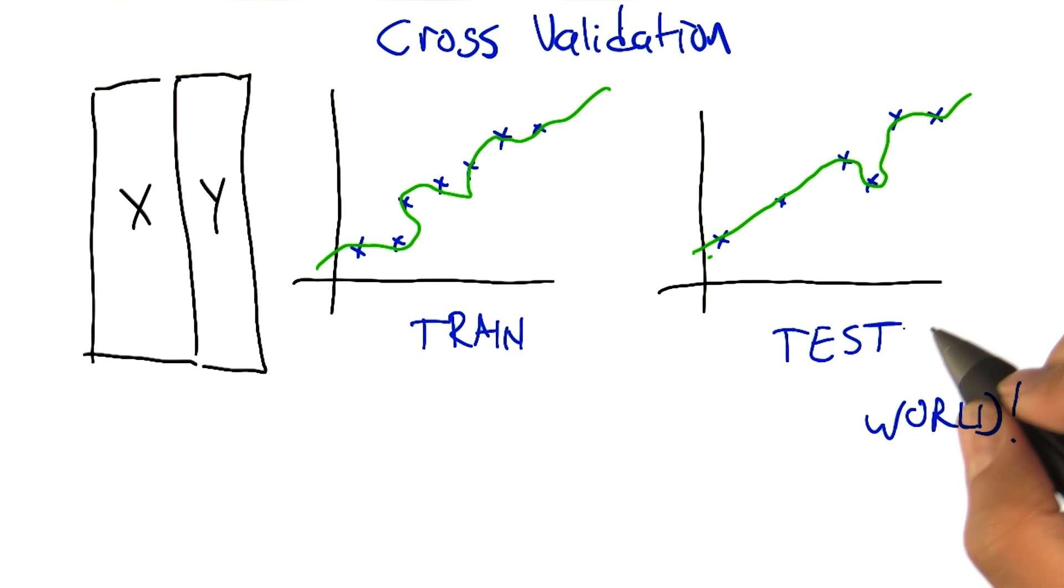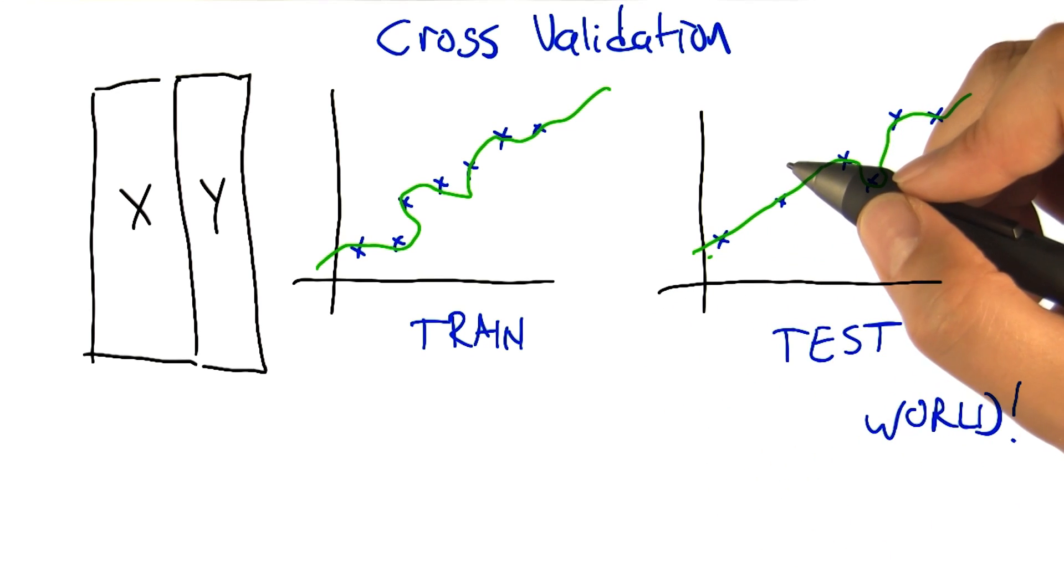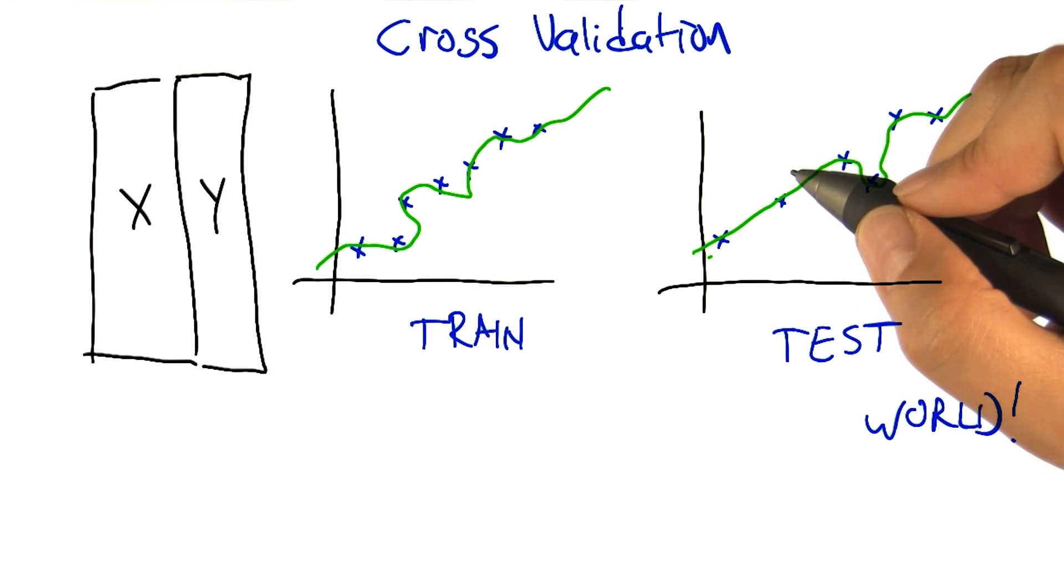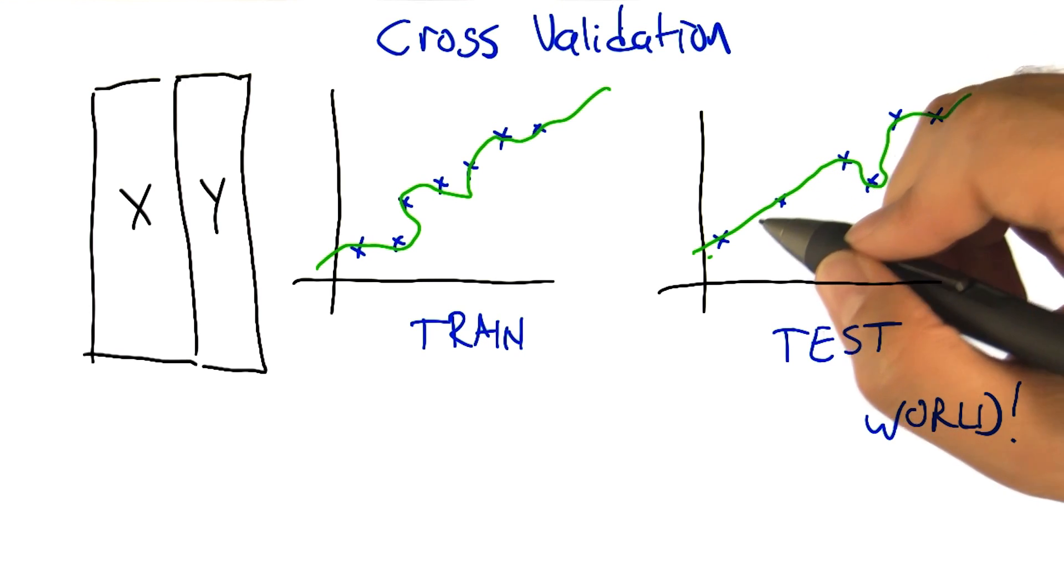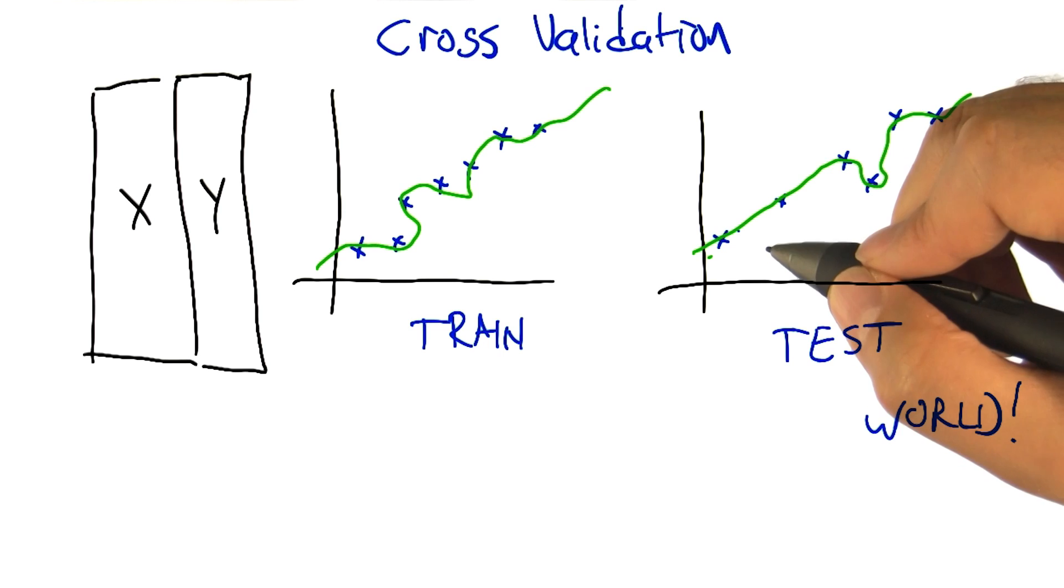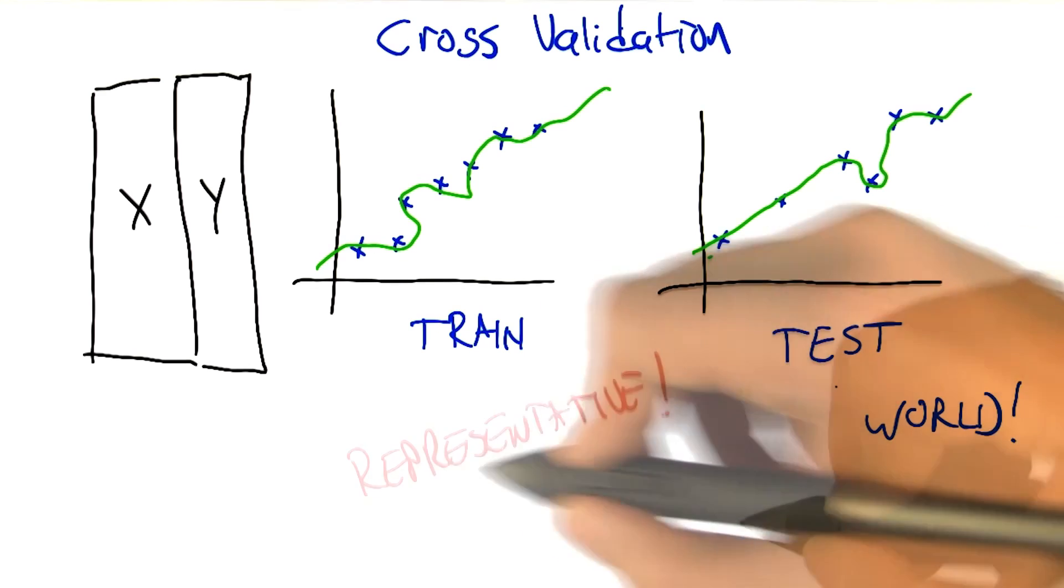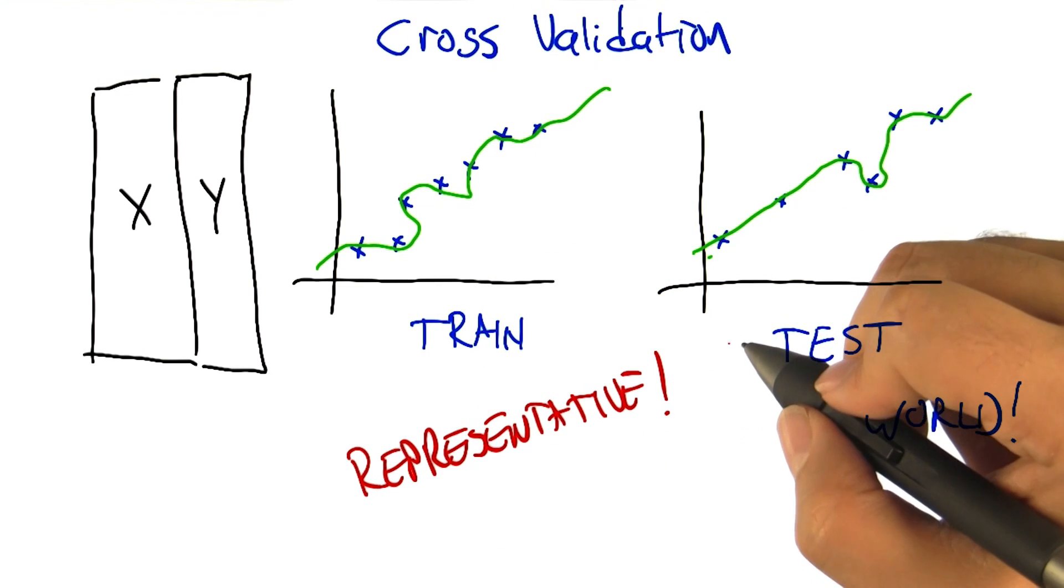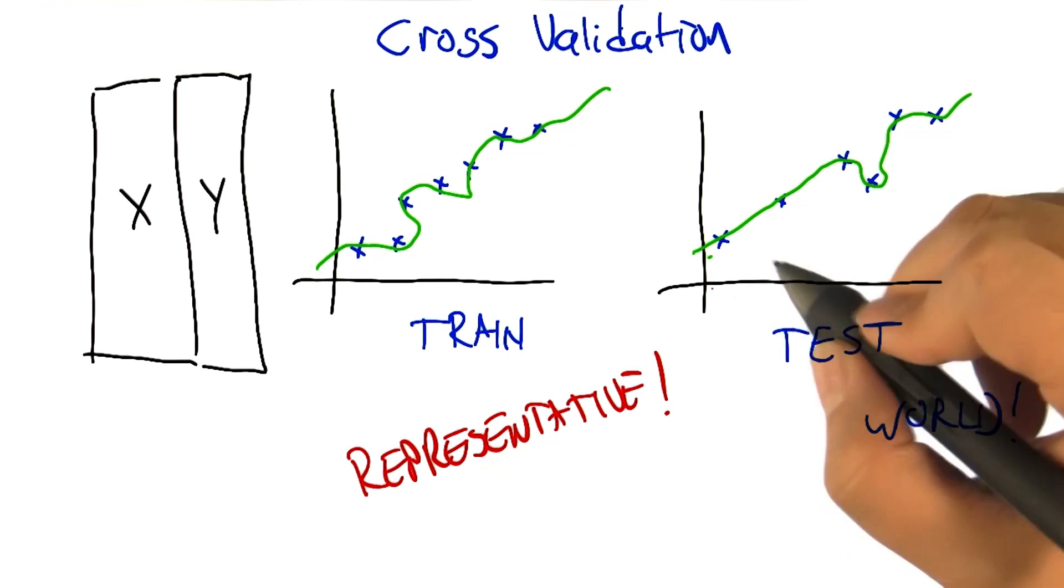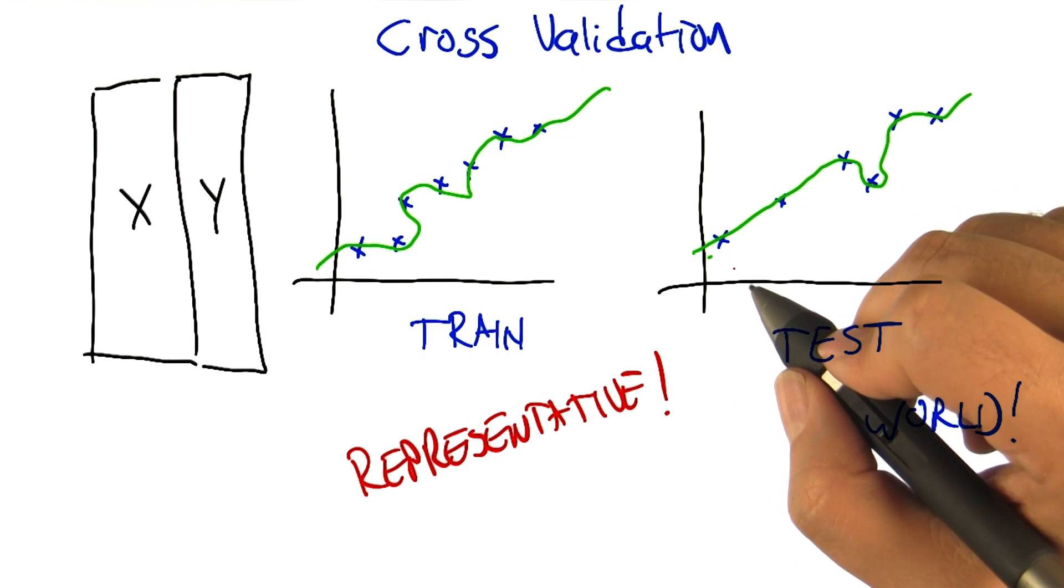Actually, that suggests something very important, right? It suggests that nothing we do on our training set, or even if we cheat and use the test set, actually makes sense unless we believe that somehow the training set and the test set represent the future. Yes, that's a very good point. We are assuming that this data is representative of how the system is ultimately going to be used.